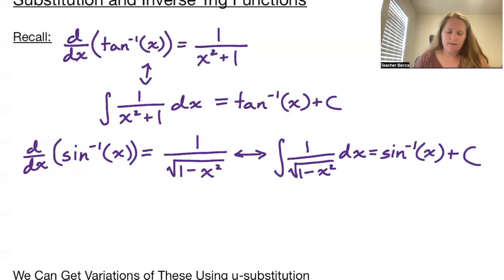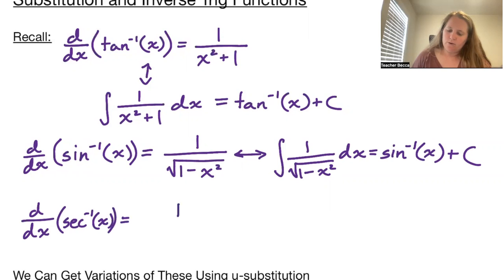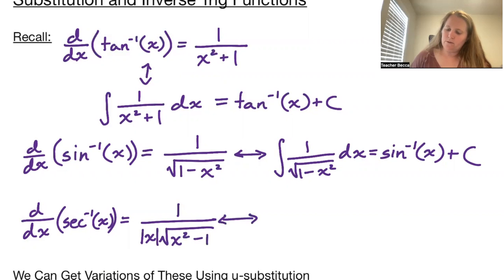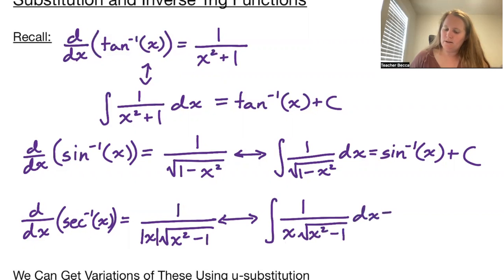And finally, our last integral came from the derivative of sec⁻¹(x), which was 1/(|x|√(x² − 1)). The corresponding integral of 1/(x√(x² − 1)) dx is equal to sec⁻¹(x) + c.